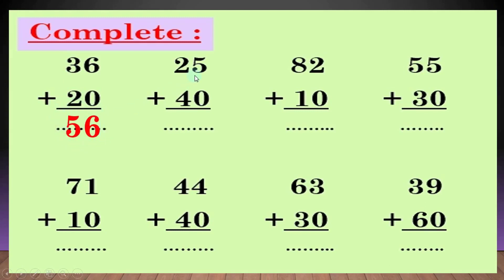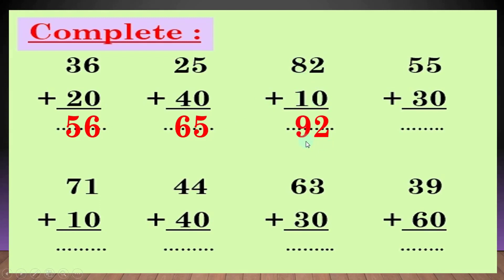another question: 25 plus 40. الـ 5 will be down. 2 plus 4: بعد 4، 5، 6. يبقى الانسر طلع 65. another question: 82 plus 10. الـ 2 will be down. 8 plus 1 equal 9. يبقى الانسر طلع 92.